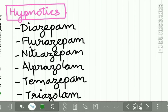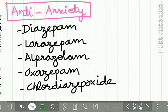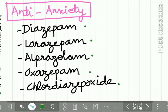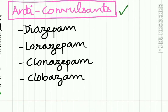The hypnotic group of benzodiazepines consists of diazepam, flunitrazepam, nitrazepam, alprazolam, temazepam, and triazolam. The anti-anxiety group consists of diazepam, lorazepam, alprazolam, oxazepam, and chlordiazepoxide. The anti-convulsant group consists of diazepam, lorazepam, clonazepam, and clobazam.